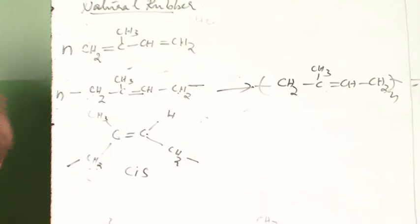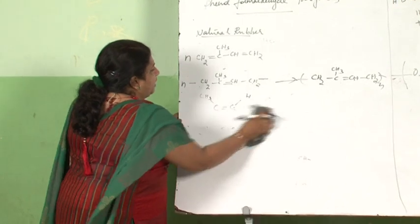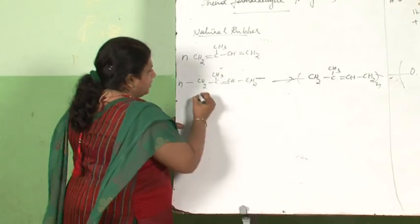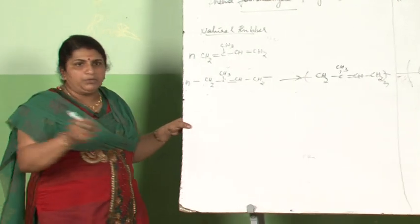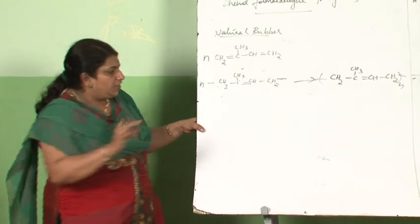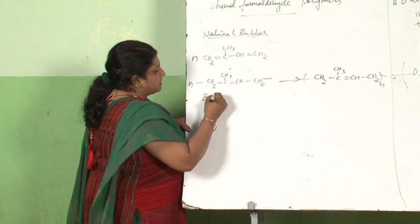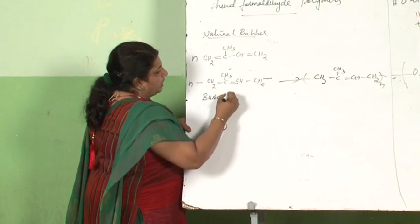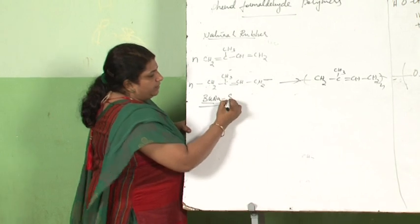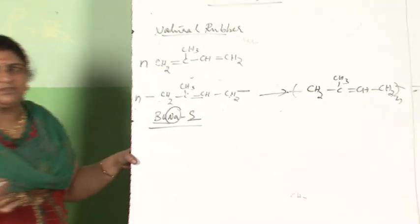Now two more species: synthetic rubbers — Buna S and Buna N. In Buna S: BU stands for butadiene, S stands for styrene, and N stands for sodium (the catalyst used). These are the components of Buna S.